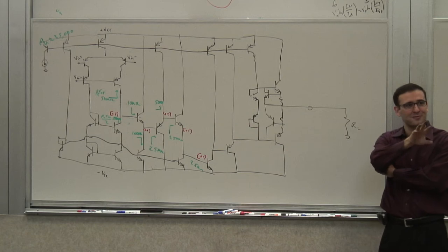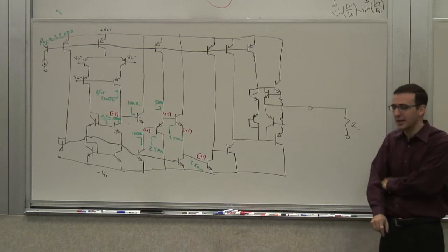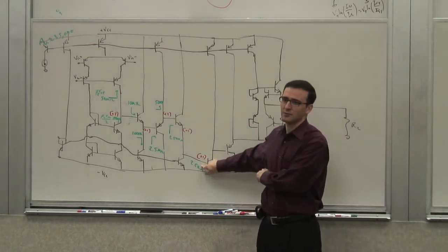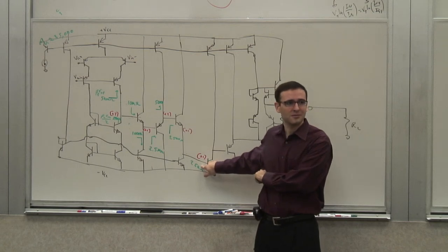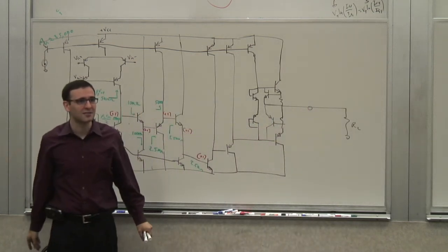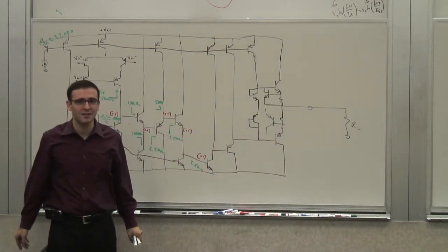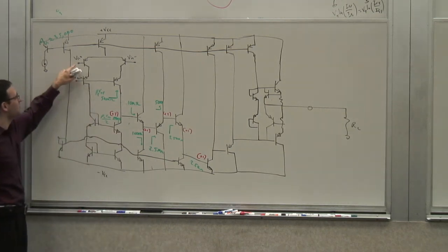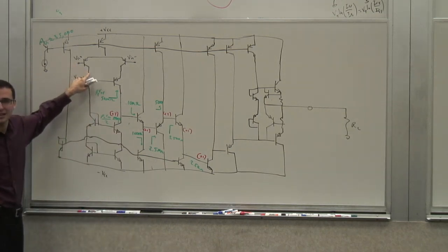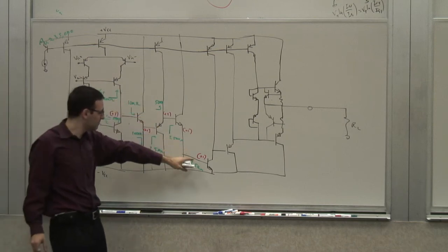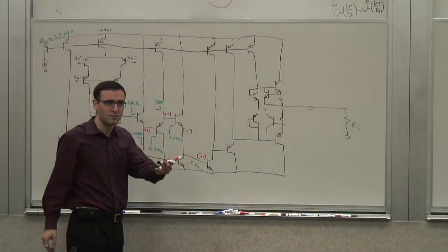Let me rephrase the question. You are assuming that this is 0.7 V above minus VCC, but you have a gain of 35,000. So a slight change at the input is going to change this voltage a tiny bit, and that's going to mess this voltage up. That's what you're saying.